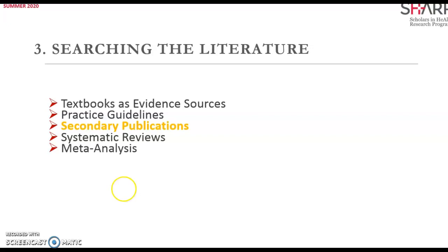Where do you find these secondary publications? Sources include the ACP Journal Club, Evidence-Based Medicine — which covers 50 journals across all subjects — Evidence-Based Cardiovascular Medicine, Mental Health, and more.